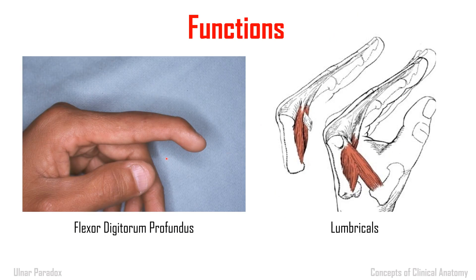If we see the function of these muscles: the flexor digitorum profundus produces flexion at the distal interphalangeal joint. So this is the proximal, middle, and distal phalanx — flexion at the distal interphalangeal joint happens because of the flexor digitorum profundus. The lumbricals produce flexion at the level of the metacarpophalangeal joint and extension at the level of the interphalangeal joint.